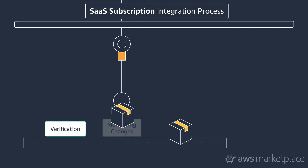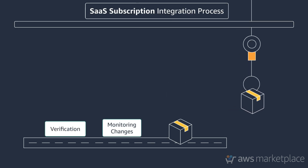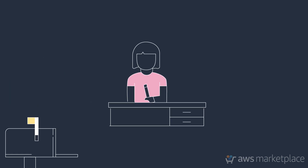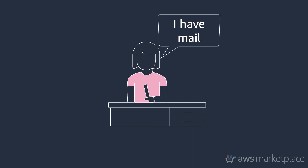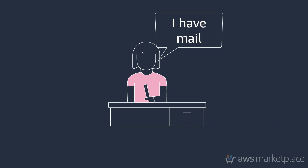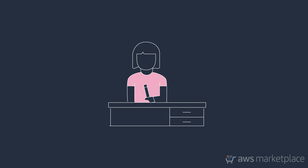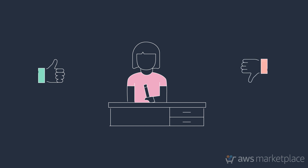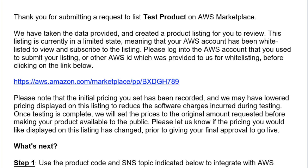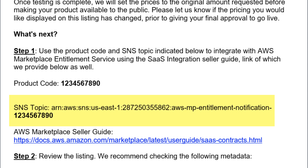Now, let's move into monitoring subscription changes. When your product is published to Limited, you will receive an email which includes an SNS topic. The topic provides notifications about changes to customer subscription and entitlement statuses, which enable you to know when to provide and revoke access for specific customers. For SaaS subscription, here is what the topic looks like.